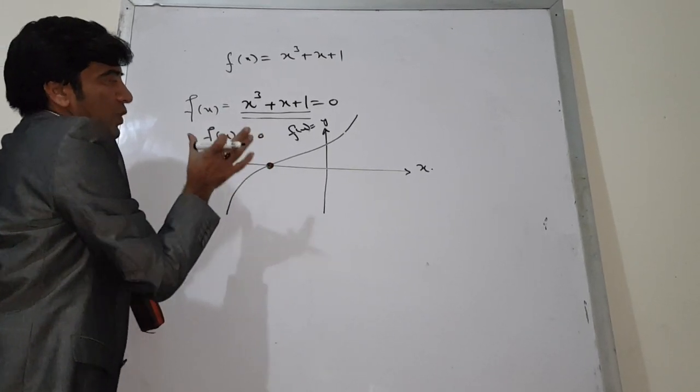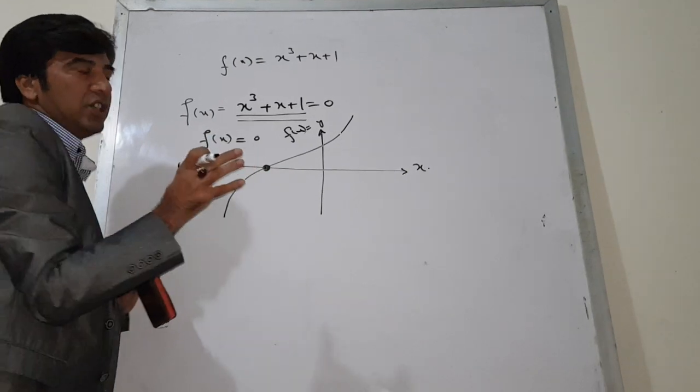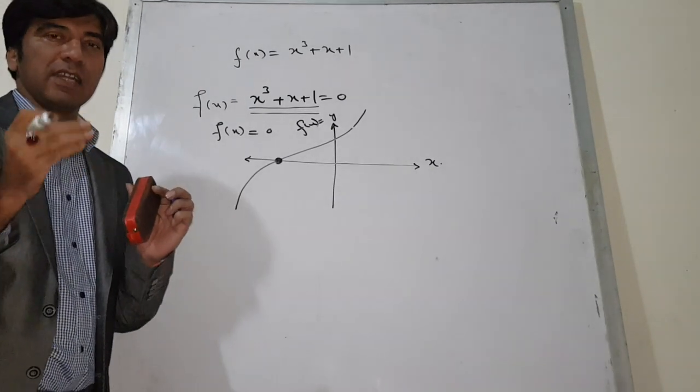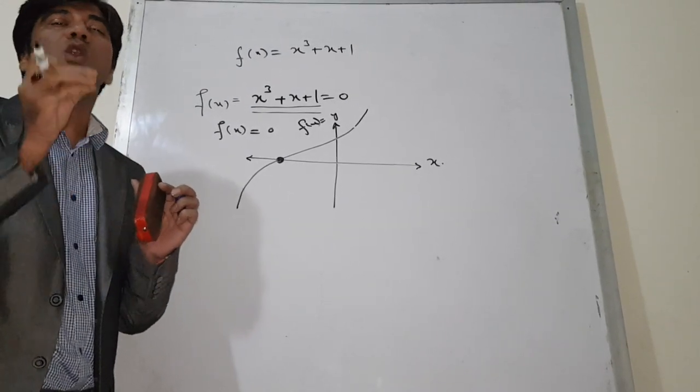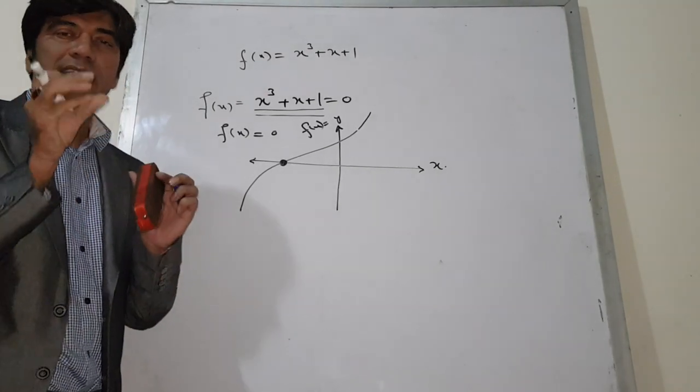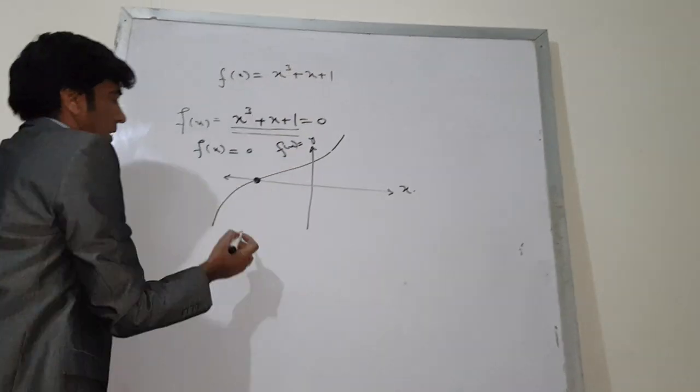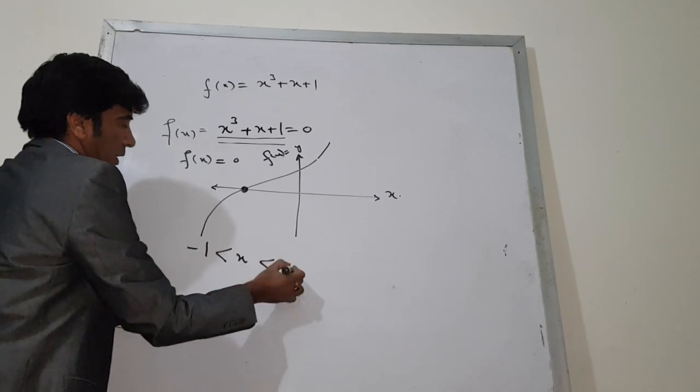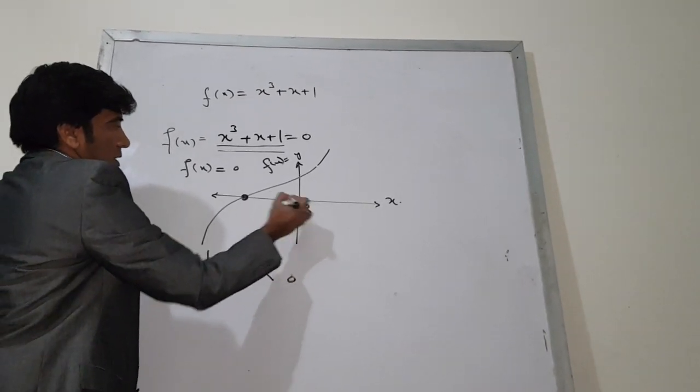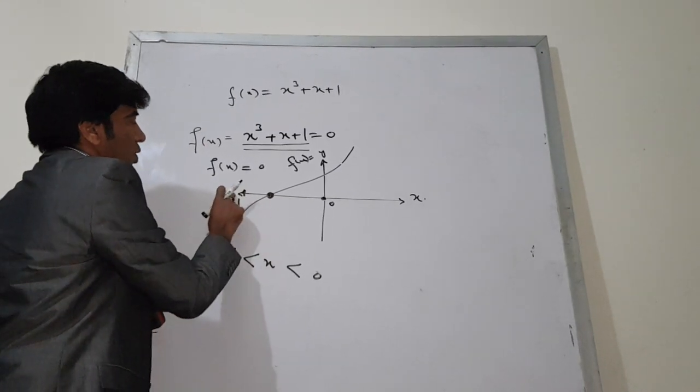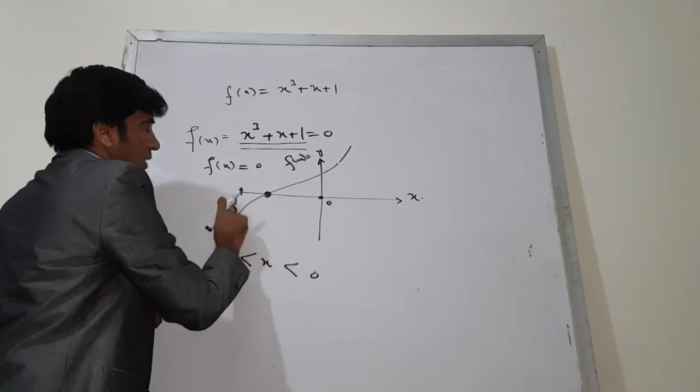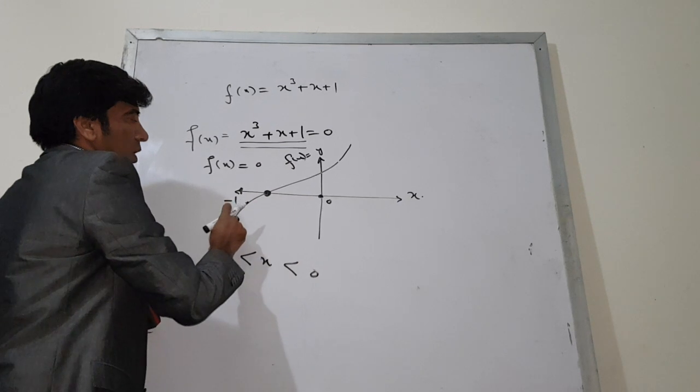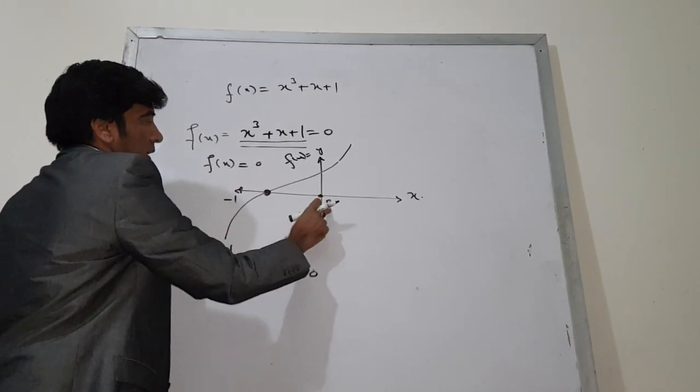Whenever you have to use iteration, the range of the solution is given in the question from where you guess that the root or solution or zero of the function must exist between this range. For this question, the range of the solution is between -1 and 0. So your value of the solution exists between -1 and 0. This means your curve passes through any point which is between -1 and 0.